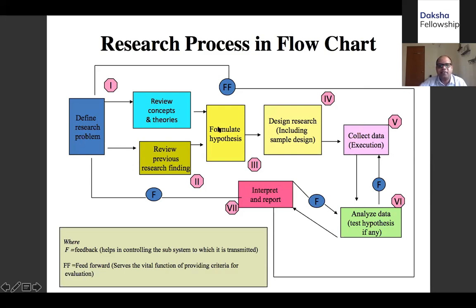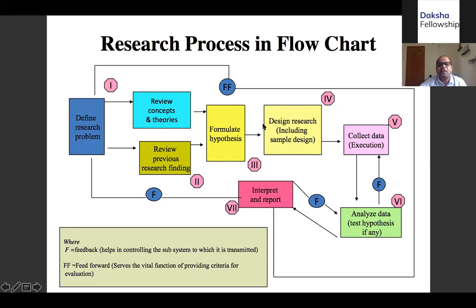When there are gaps in the existing literature, we go to the next step, which is typically to start formulating a hypothesis. Let's say most existing literature says that low FIR registration is because of corruption, or because the police doesn't want to do their job. But let's say you have a fresh hypothesis — it's not really about any of these things, but there's something more. That is what your hypothesis is. However, let me make one thing very clear: in social science research, a hypothesis is not always mandatory unless we're doing a quantitative study. When it comes to qualitative studies, it's not mandatory to have a hypothesis. What is more important is to have what we call research questions — the exact set of knowledge questions we are going to answer for the purpose of conducting this research.